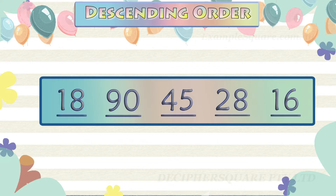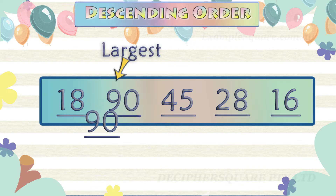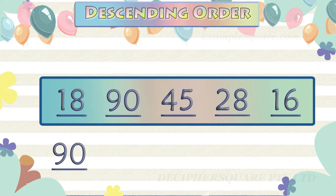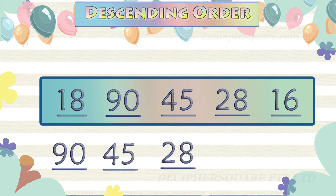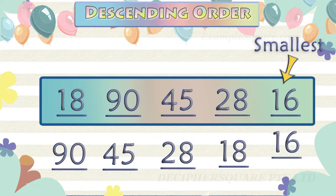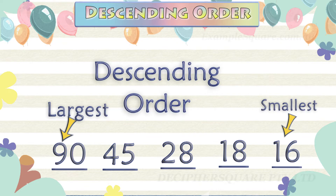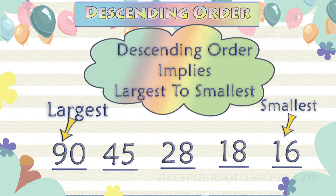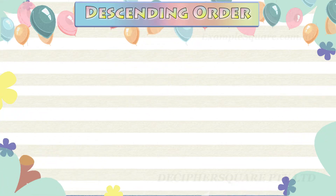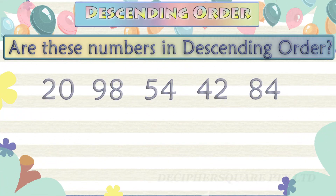Five numbers are given. Here is an example of arranging these numbers in descending order. Are the numbers given below arranged in descending order?